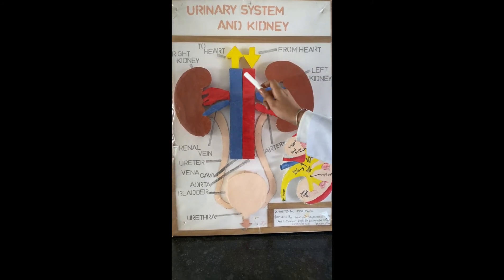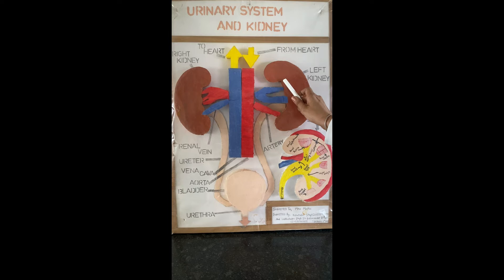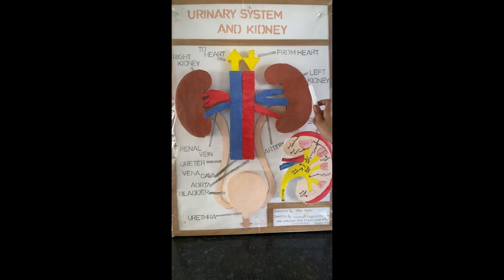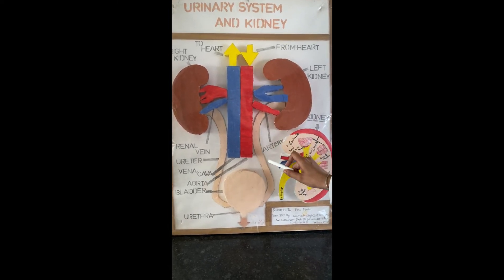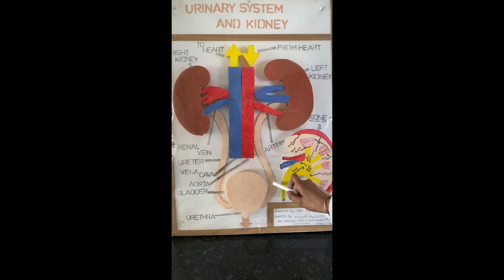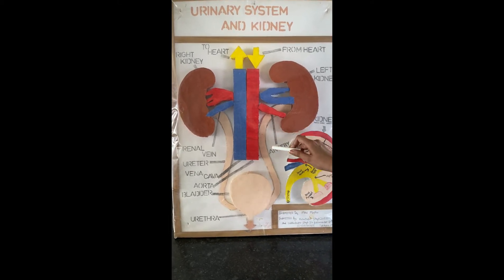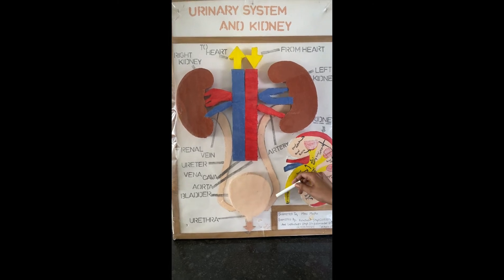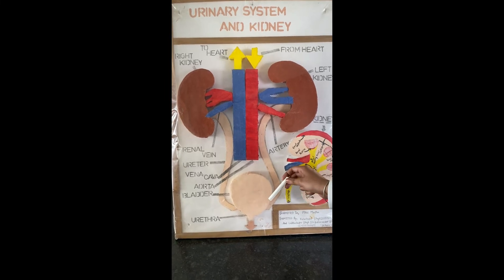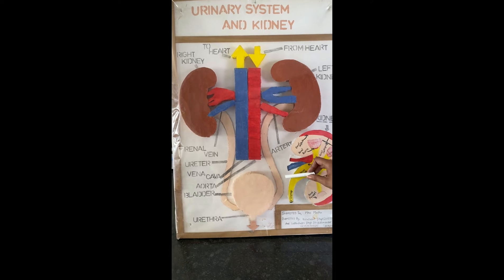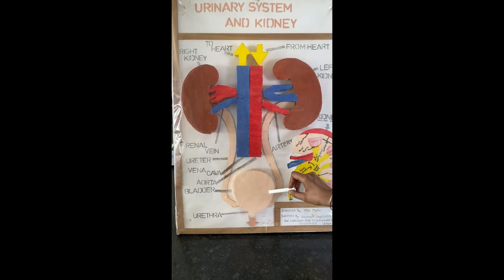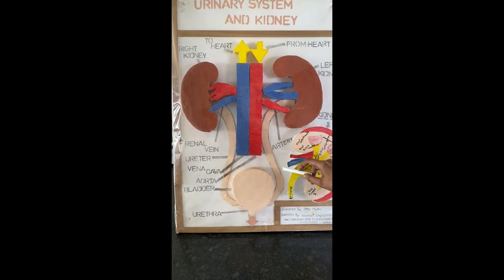There are about one million nephrons in each kidney. When a certain amount of urine is formed by the nephrons, it is passed to the ureters. The ureters extend from the renal pelvis to the urinary bladder. These ureters enter the urinary bladder in an oblique fashion, which prevents the backflow of urine. Urine passes from the kidneys to the urinary bladder via the ureters by the process of peristalsis.